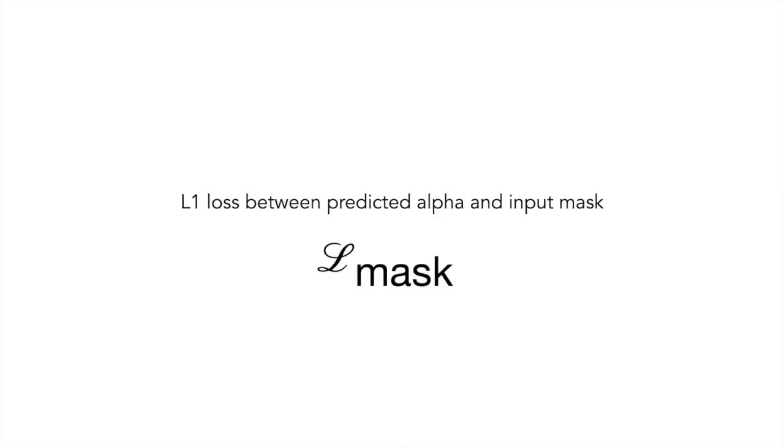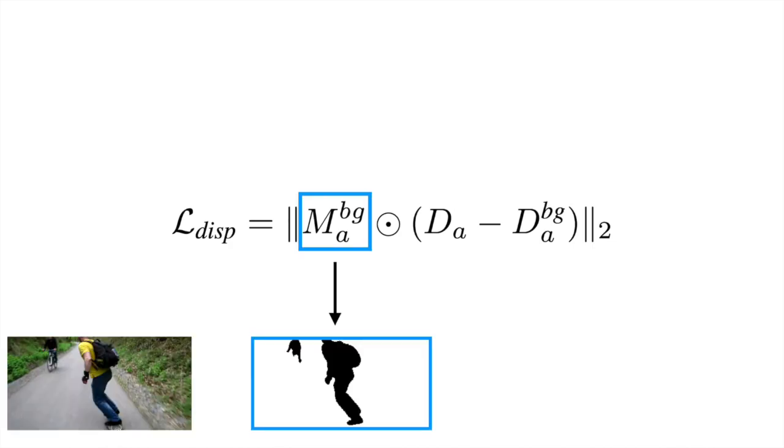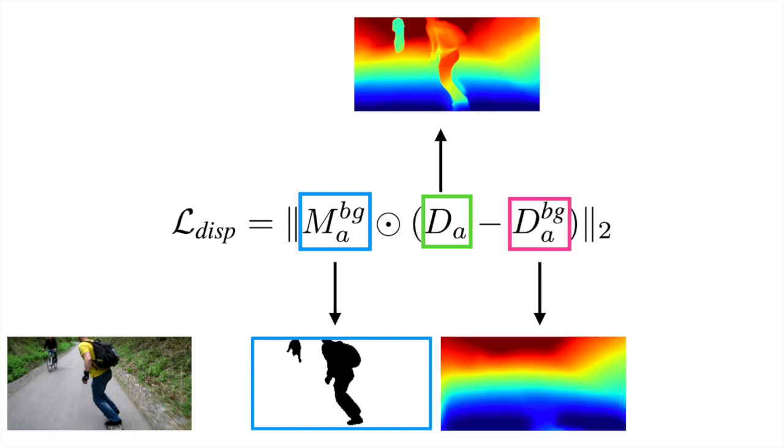Additionally, to guide the layers to be semantically meaningful, we add an L1 loss between the predicted alpha and the input masks. We add a disparity loss to distill the available depth information into the model. The first term corresponds to the complement of the union of all input masks that approximately indicate the background region. The second term is the input depth and the last term is the predicted background depth.